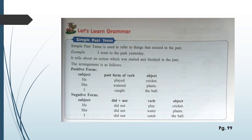First, we will look at the formation of positive sentences: Subject plus past form of verb plus object. Look at the examples: 'He played cricket', 'She watered plants', 'I caught the ball'. In all these sentences, the past form of the verb is used, which shows that all these actions occurred in the past.